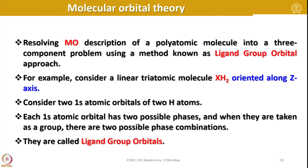When we write molecular orbital diagrams for simple diatomic or heterodiatomic molecules it is very easy. I am sure you are all familiar with writing MO diagrams for molecules such as H2, N2, O2, or even CO. However, when we want to write molecular orbital diagrams for polyatomic molecules it is very appropriate to consider a set of orbitals called ligand group orbitals.